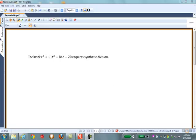The question was asked, how do you factor t cubed plus 11t squared minus 84t plus 20? The way to factor this, or one way to factor this, is to use synthetic division.